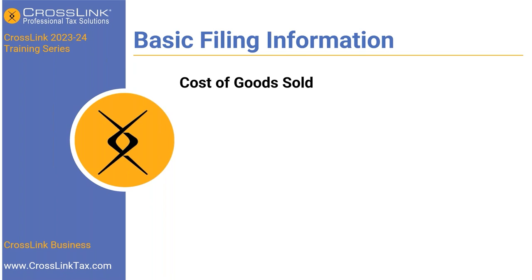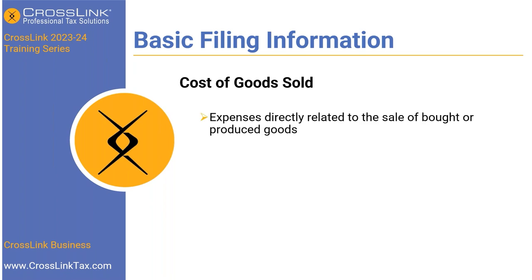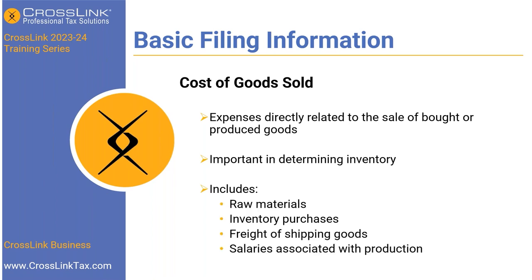Cost of goods sold represents the expenses directly related to the sale of bought or produced goods and is important in determining inventory. It includes items like raw materials, inventory purchases, freight or shipping of goods, and salaries associated with production. When determining inventory, cost of goods sold is a key component.